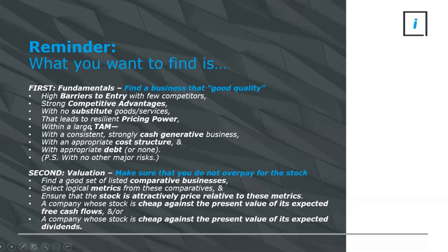These are all background elements about the industry sector, economies, and the business model. But we also want to make sure the business is well run, because you can have the best macro setup and greatest business model in the world, and if you have bad managers running it, it's probably going to do badly. So we want to make sure the individual business has strong cash generation, appropriate cost structure, appropriate debt or none — remember, debt at an asset or company level is synonymous with risk.